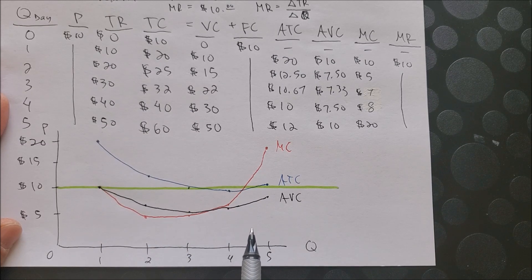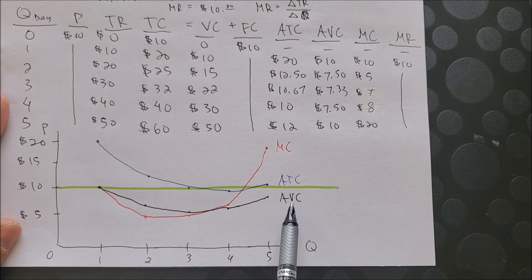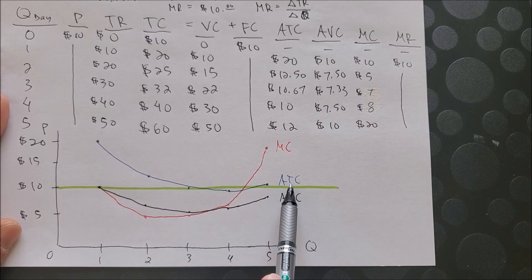And if you remember that AVC can never be above ATC, because AVC plus AFC is ATC.